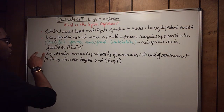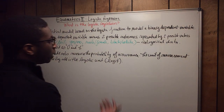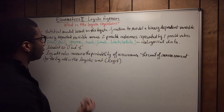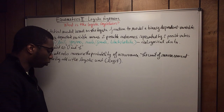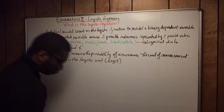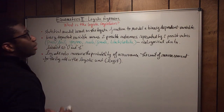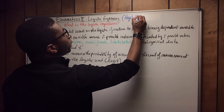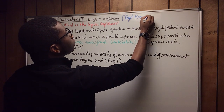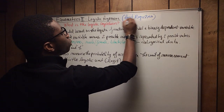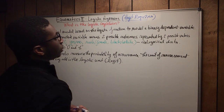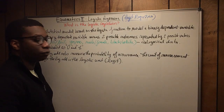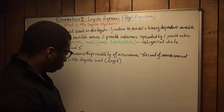The log odd ratio measures the probability of occurrence, and the unit of measurement of the log odd scale is the logistic unit, also known as the logit. So if you see 'logit regression,' that's what it stands for — logistic regression.